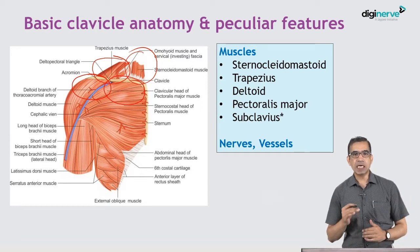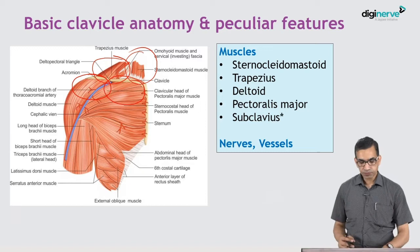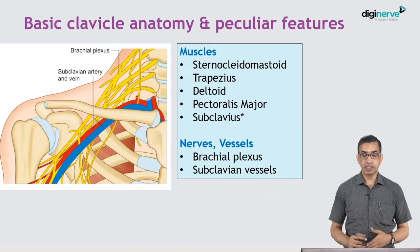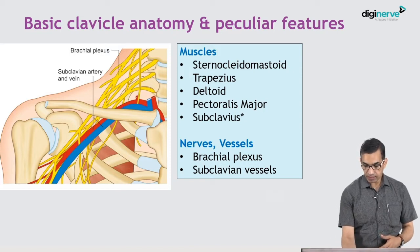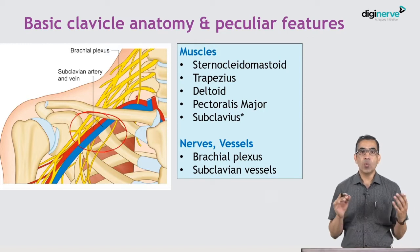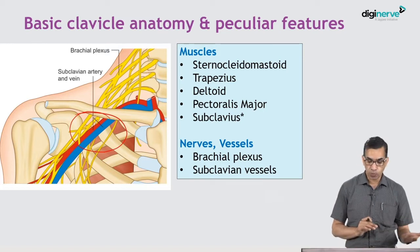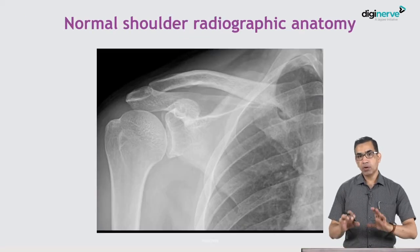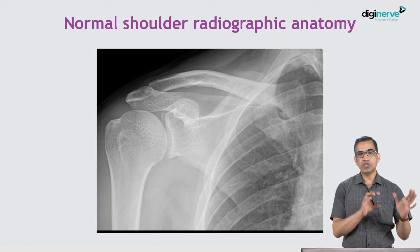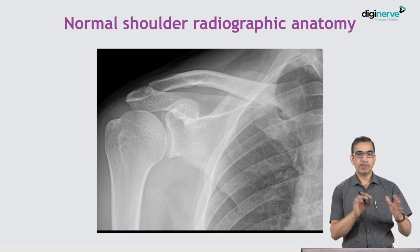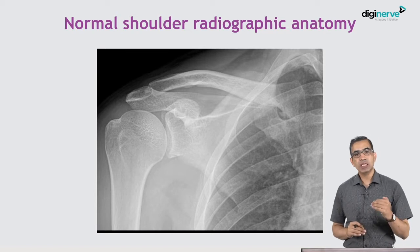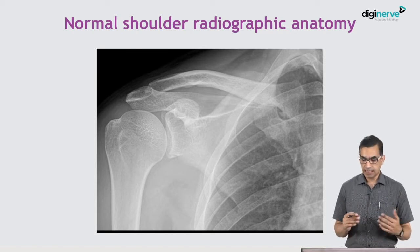On the undersurface of the clavicle, which we cannot see in this diagram, is the subclavius muscle — the muscle which is under the clavicle. Then there are nerves and vessels. Under the clavicle there is the brachial plexus and subclavian artery and vein. These are important because whenever injury to the clavicle happens, if the fragment moves too much downwards it can injure the subclavian vessels and the brachial plexus.